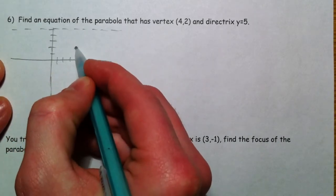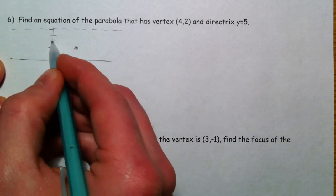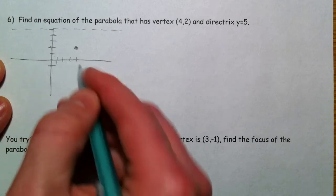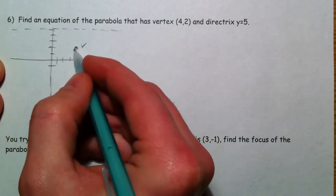So if this is the vertex and this is the directrix, the focus is going to be on the other side here. So we went up 1, 2, 3. We would go down 1, 2, 3 to get to the focus. This is the vertex, focus. So it opens down.